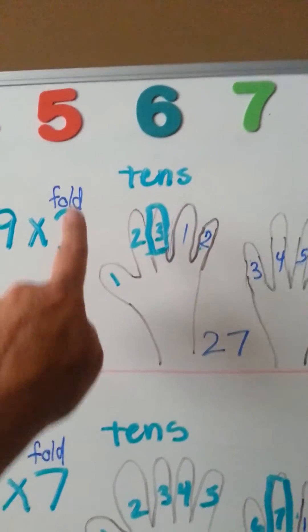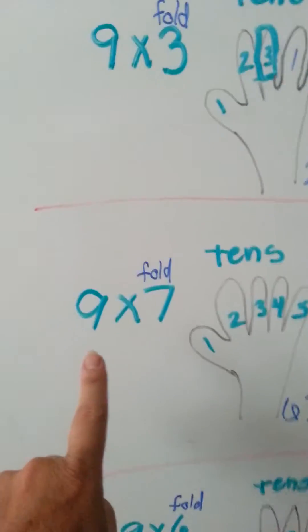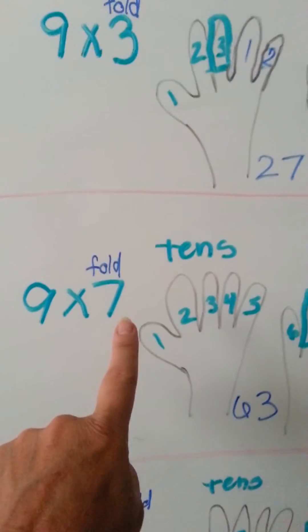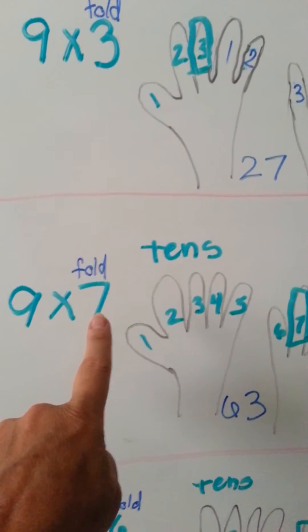9x3, you fold the third finger. Let's try it again. 9x7, you're going to fold the seventh finger.